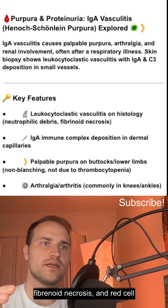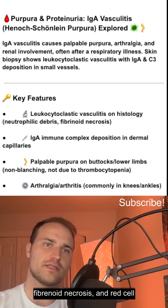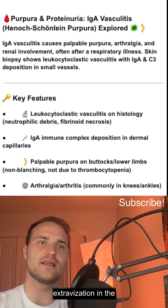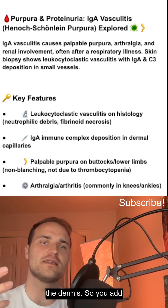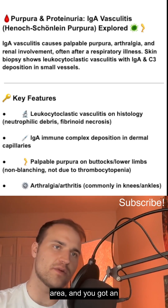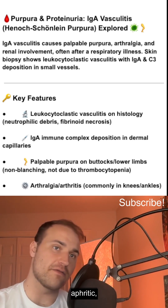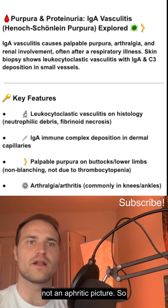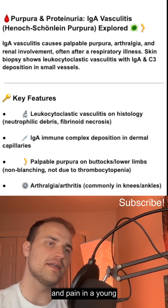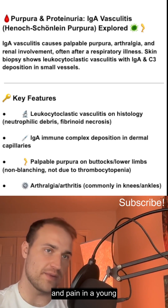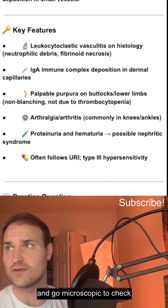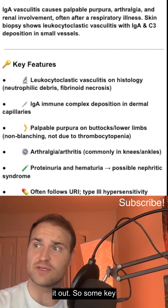That means neutrophilic debris, fibrinoid necrosis, and red cell extravasation in the dermis. Add in the hematuria and proteinuria, and you've got a nephritic — not a nephrotic — picture. So if you see purpura and joint pain in a young patient, think IgA and go microscopic to check it out.